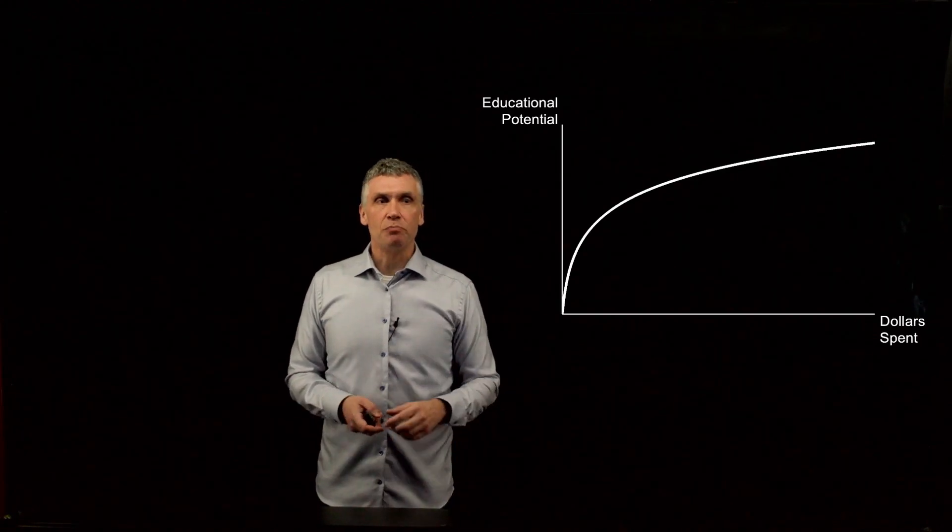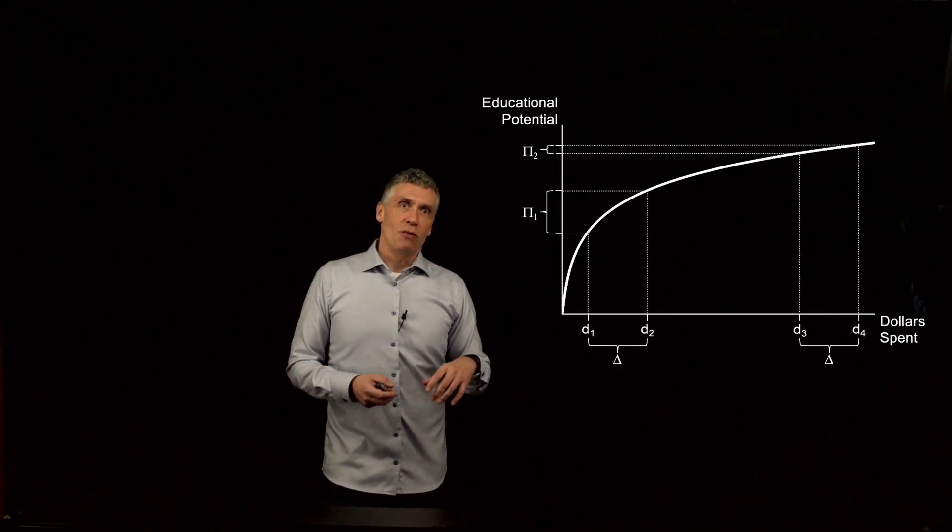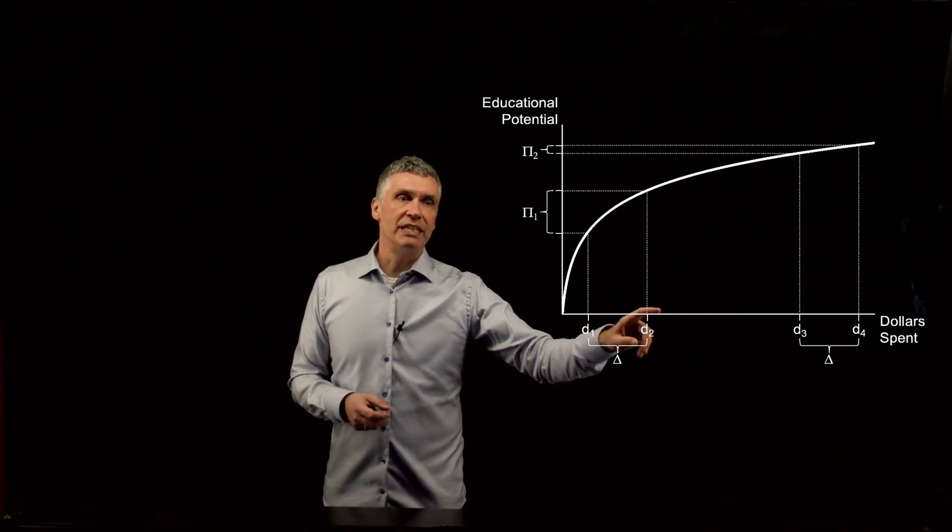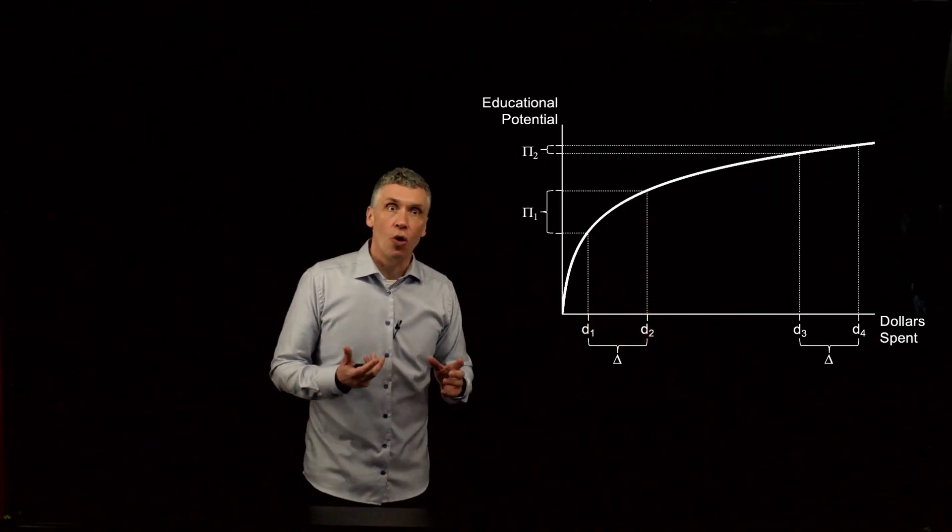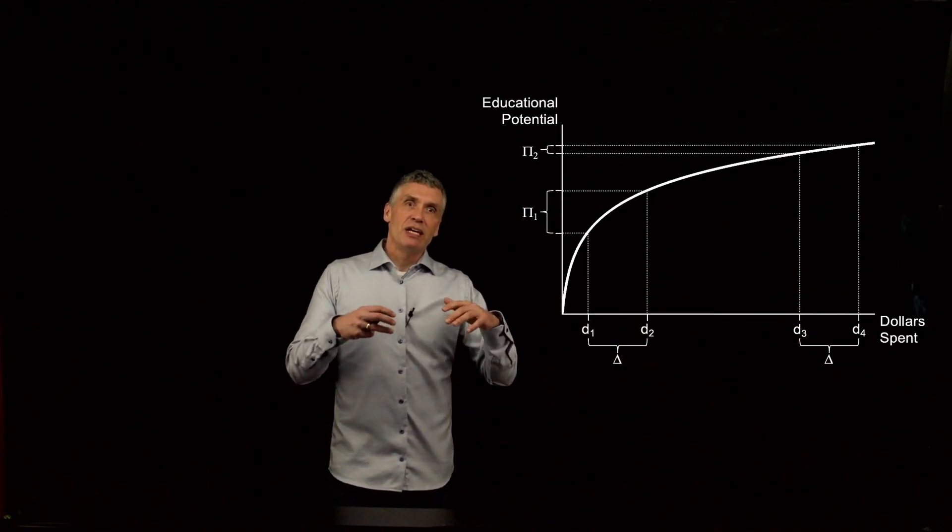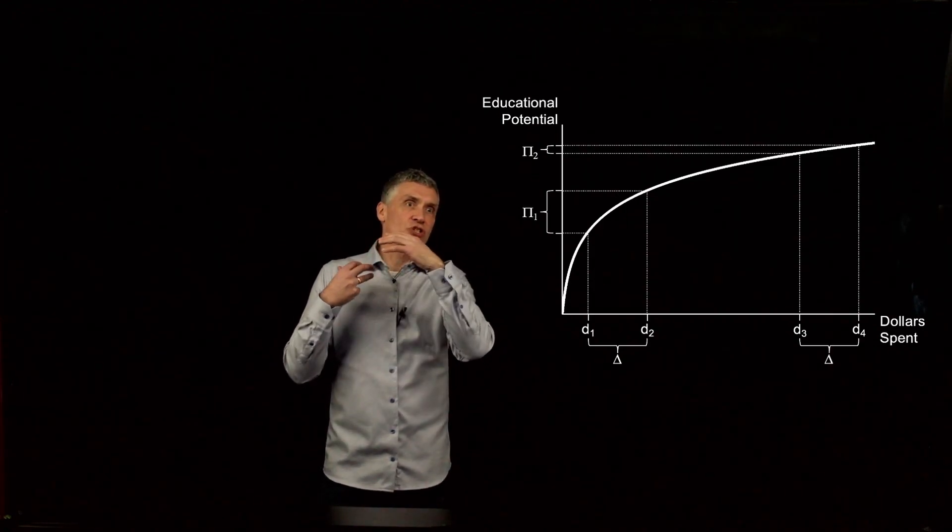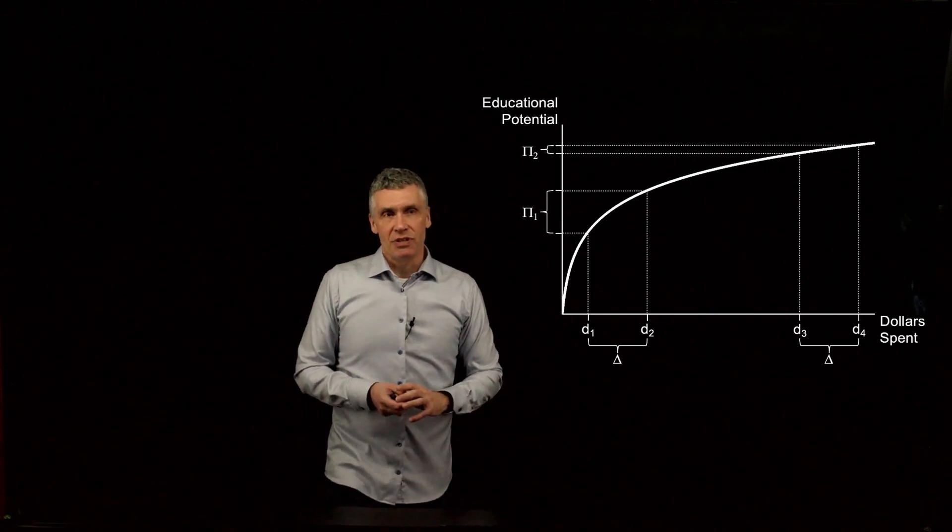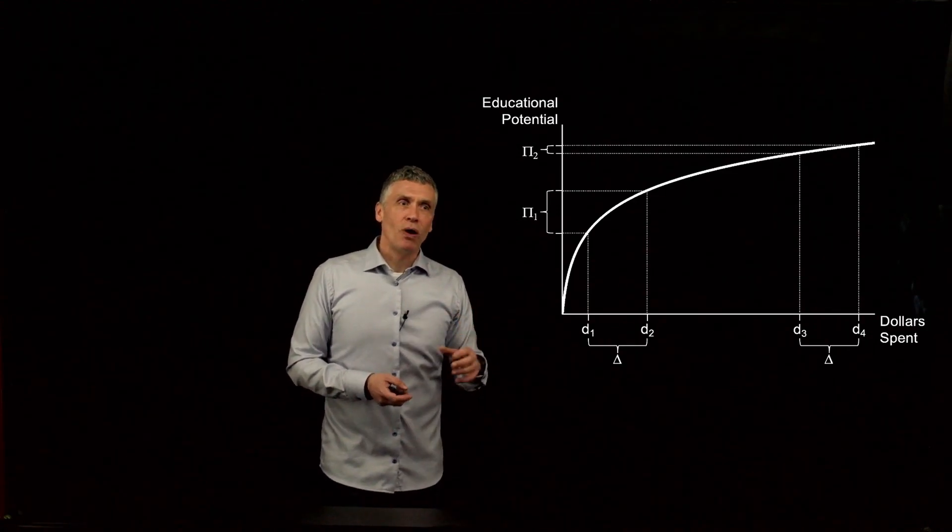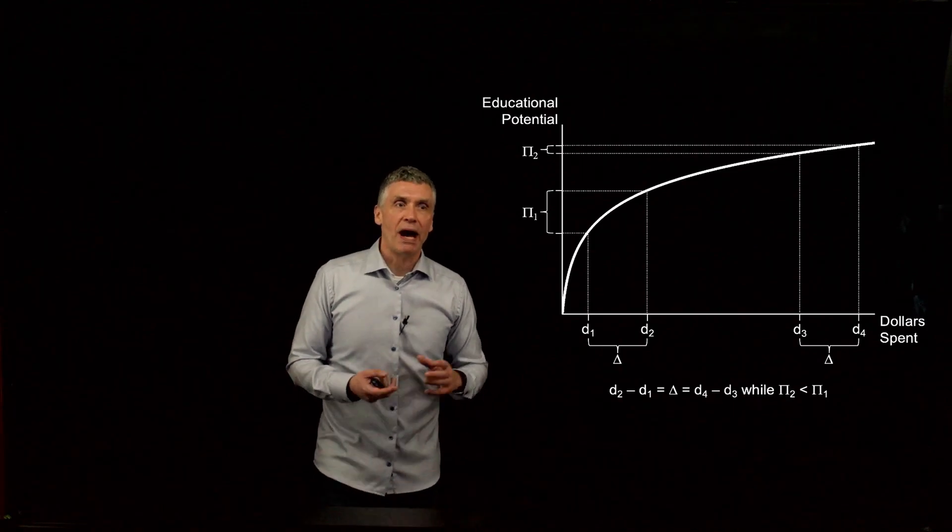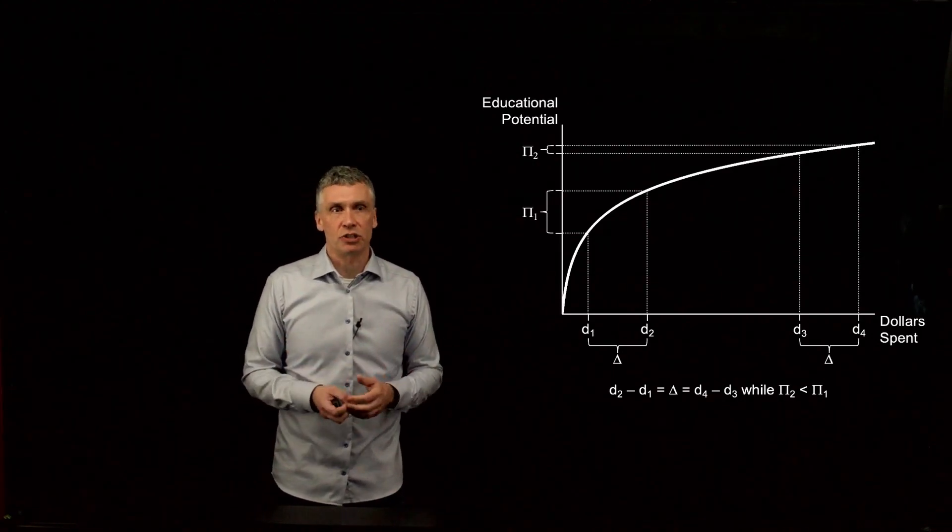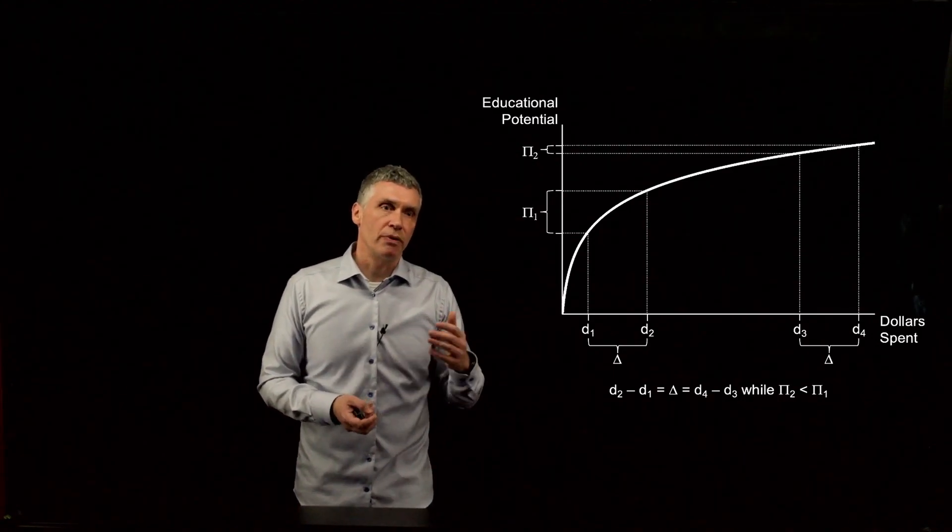And I don't think it's that controversial to think that this studio has marginal returns to scale. And in the simplest form, what we're saying is, if we have a fixed investment of delta dollars, so if we go from D1 dollars to D2, which is spending of delta dollars, or we go from D3 to D4 dollars, that the educational potential achieved for the studio, the difference between what D1 can achieve and D2 can achieve, which is pi 1, that pi 1 is greater than pi 2, even though they represent the same fixed investment cost of going from D1 or D3 to D2 or D4.